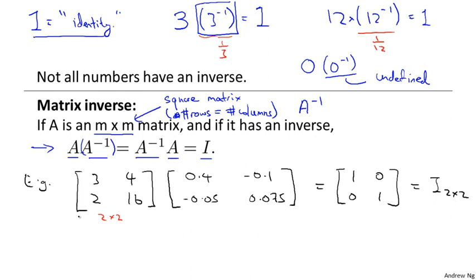So on this slide, this matrix is the matrix A, and this matrix is the matrix A inverse. And it turns out that here I've computed A times A inverse. It turns out if you compute A inverse times A, you also get back the identity matrix.